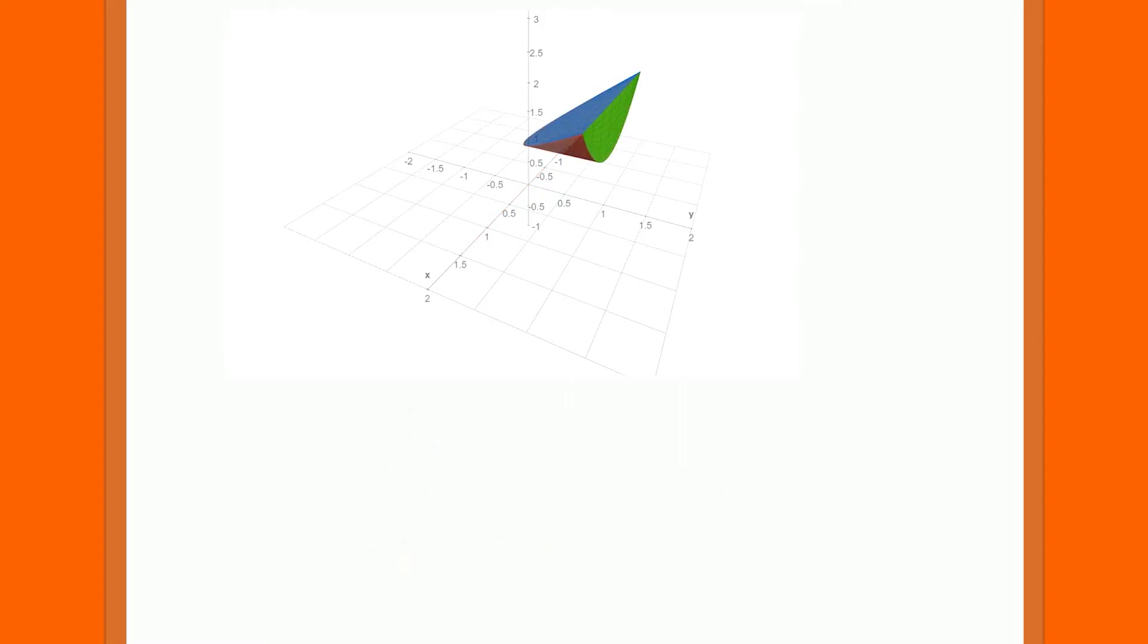We'll begin by moving through the region in the y direction. This will force us to enter the slanted plane of z equals y plus 1 and exit out the plane y equals 1. These, of course, will become our bottom and top bounds. Since we are moving in the y direction, we must describe both of these surfaces in terms of y. So the bottom bound will be z minus 1 and the top bound will be 1.